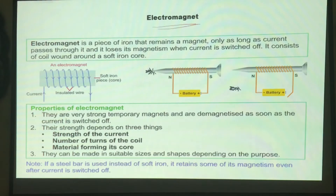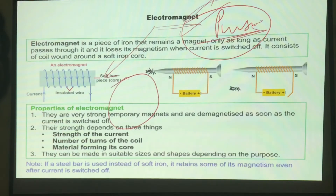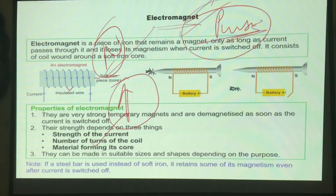Coming to an electromagnet — we all know the various uses of an electromagnet. An electromagnet is not a permanent magnet, which means only if a current is given does it behave like a magnet. Just like a compass doesn't deflect all the time — only if there is a magnetic field on the opposite side does it start deflecting — an electromagnet lasts as a magnet only when there is a current flow. What does this depend on? It depends on the strength of the current, number of turns of the coil, and the material forming its core.